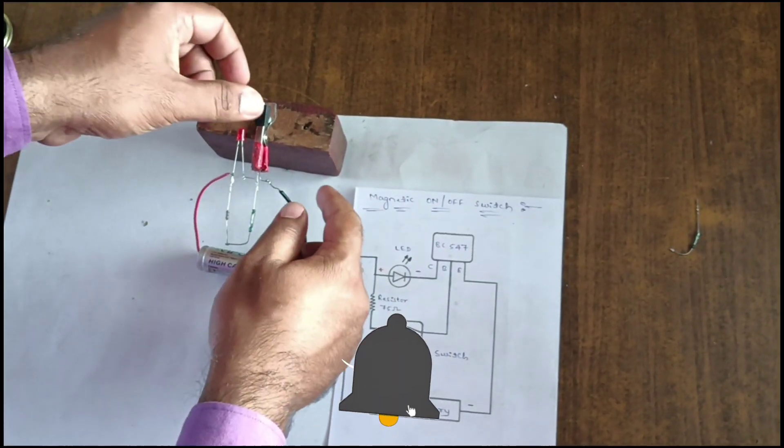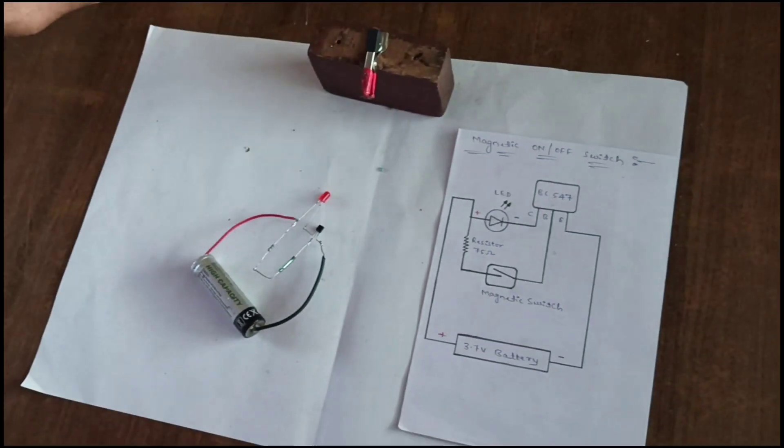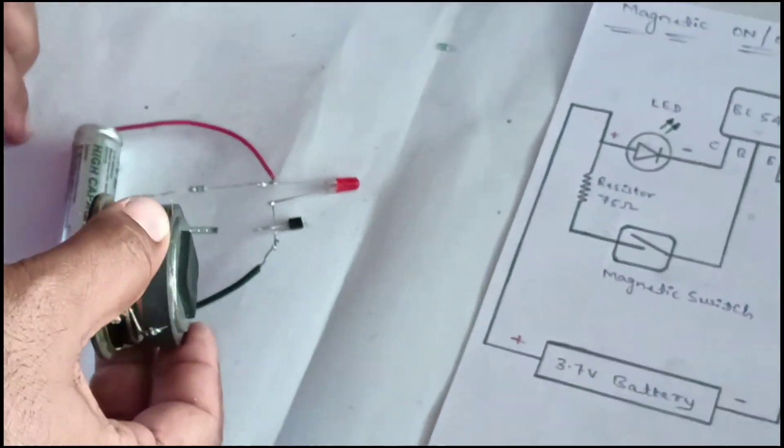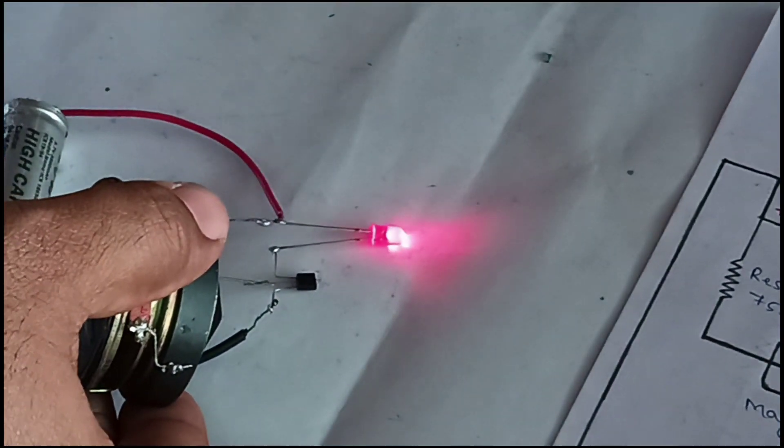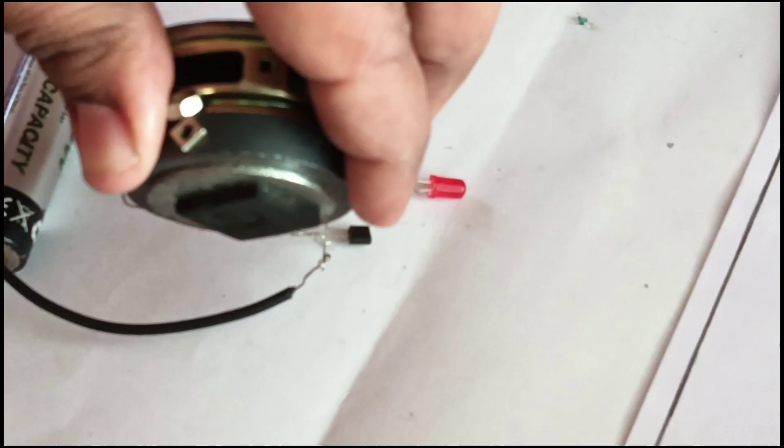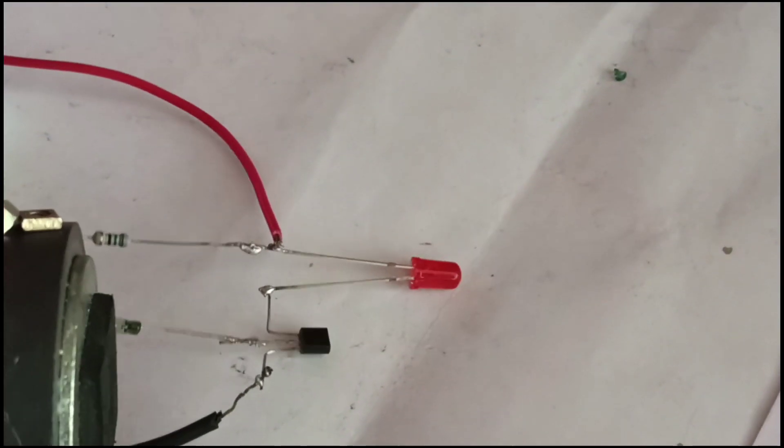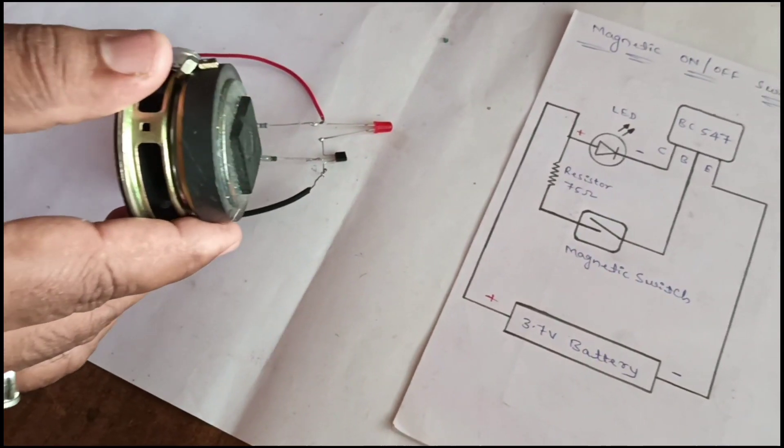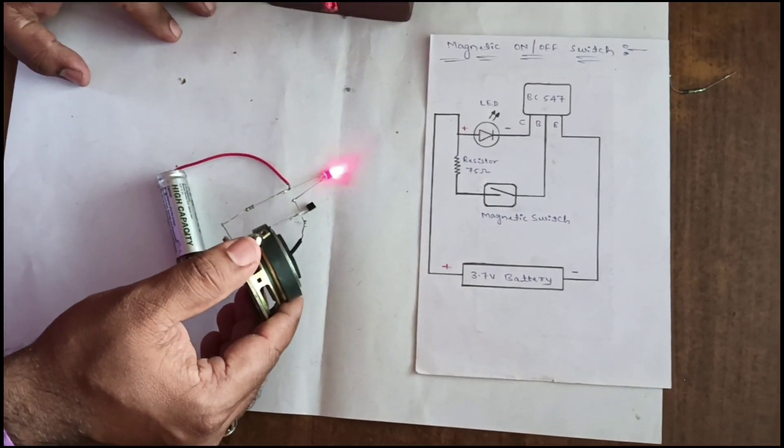Let's test the circuit. This is the magnet. When it goes near to the switch, this LED will glow. You can see. The magnetic switch turns it on, off, on, off, on, off.